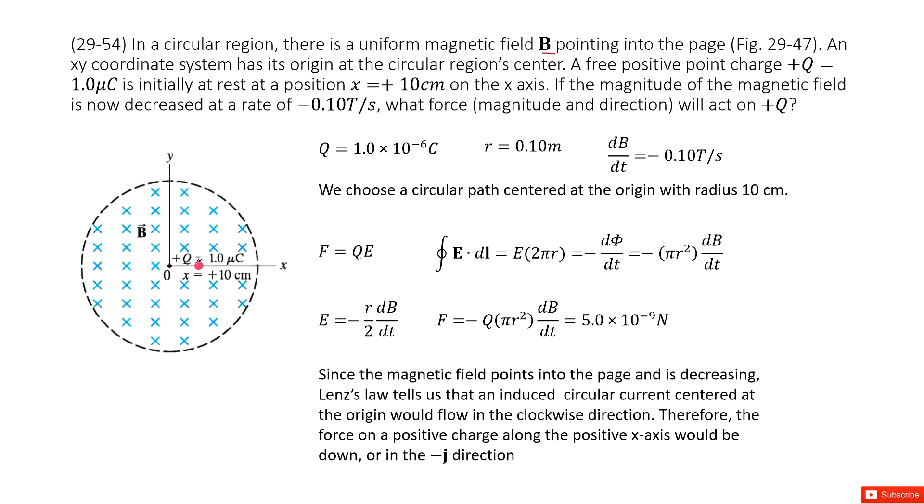This is the Maxwell equation. We know the changing magnetic field will produce electric field. So how is this possible? This is Faraday's rule. We can draw a circle just with the radius r as 0.1 meter.